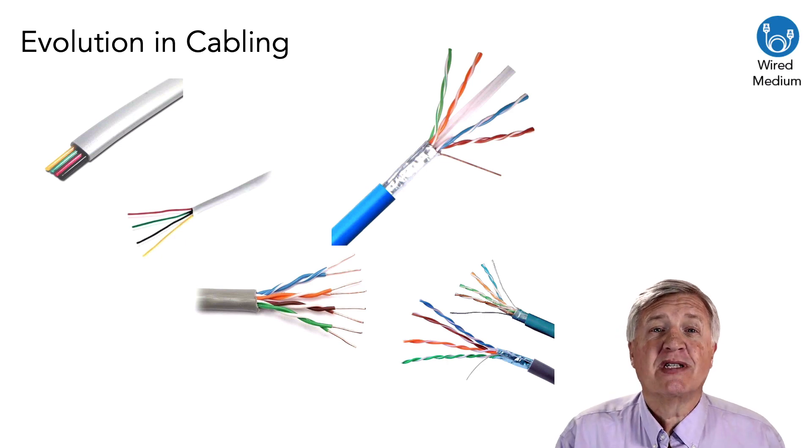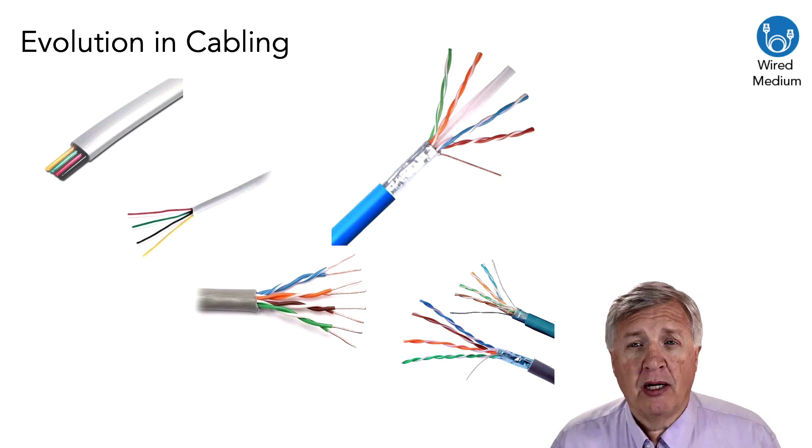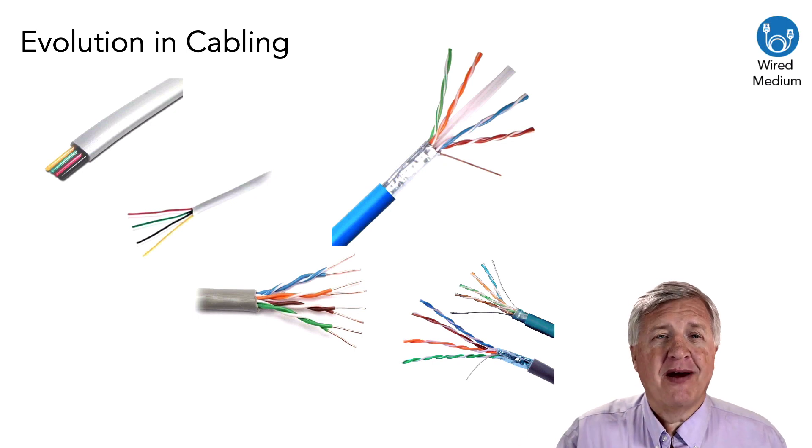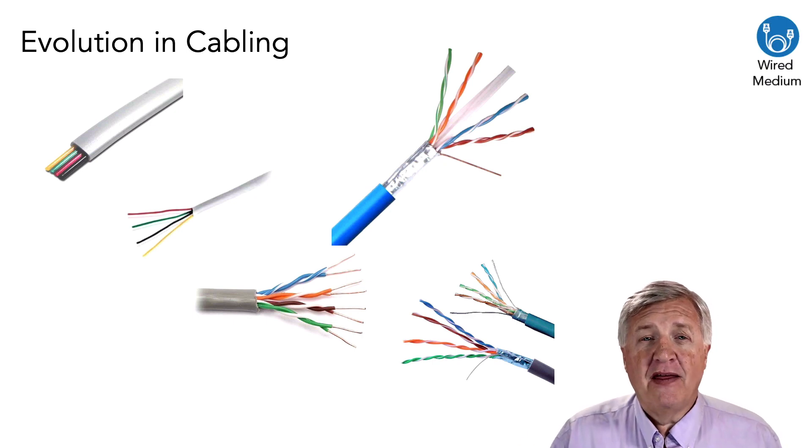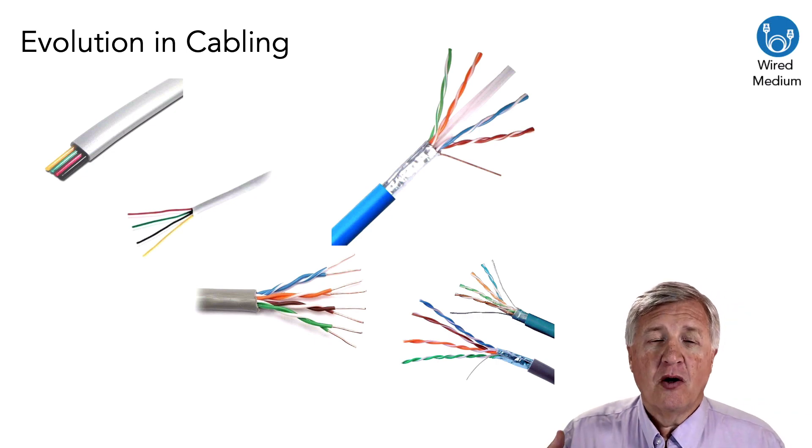And then we went to twisted pair. The twist kind of helped some of the things that would happen when the cables were next to each other. Little crosstalk going on. And we found that even with twisted pairs, there was still too much crosstalk, too much interference. So we started to twist the pairs individually. And then we came up with CAT3 cabling where we had some very specific requirements that if we met those requirements, we could push 100 meg.